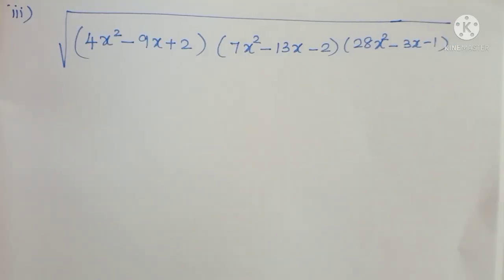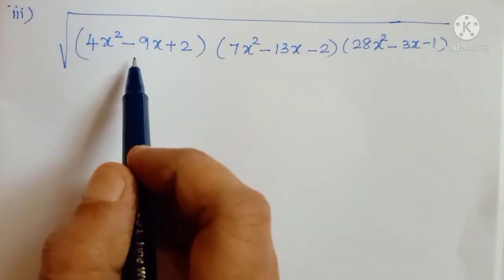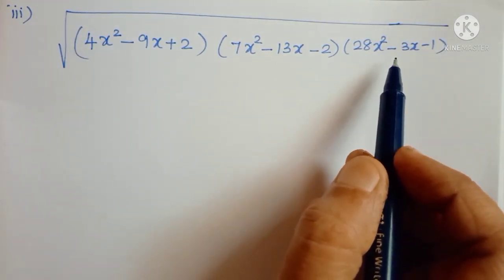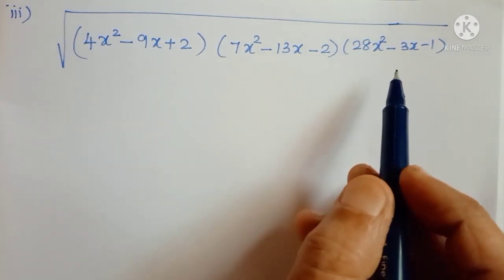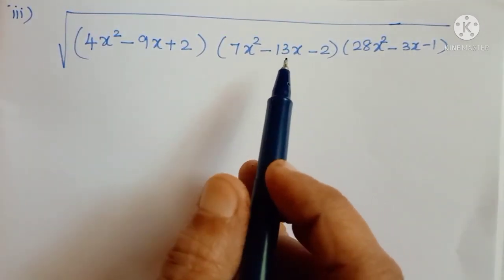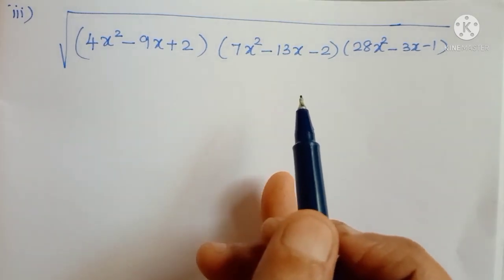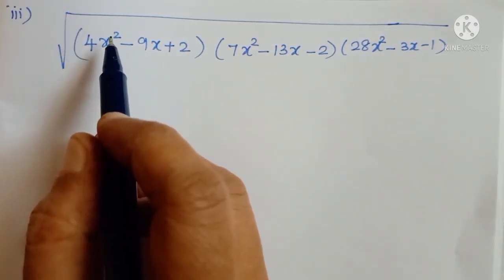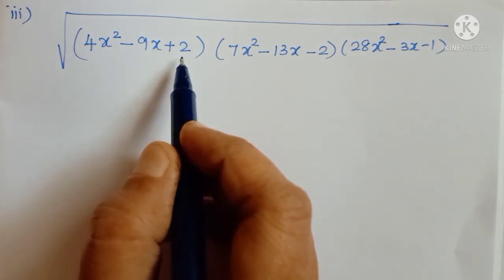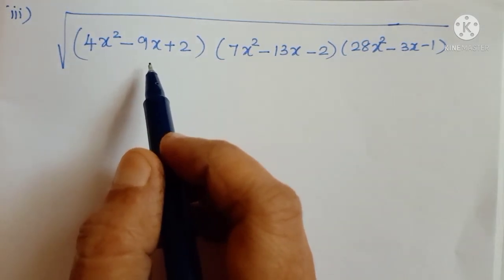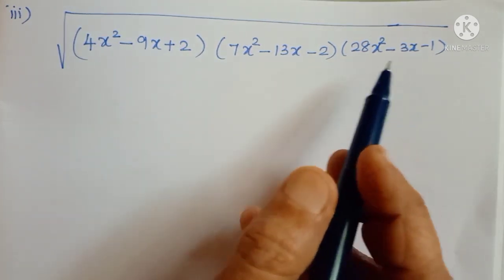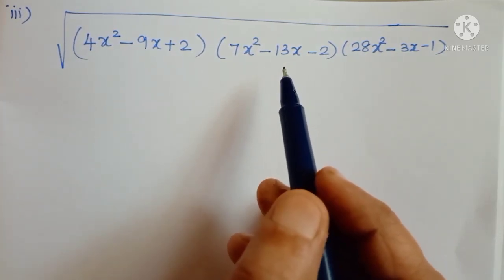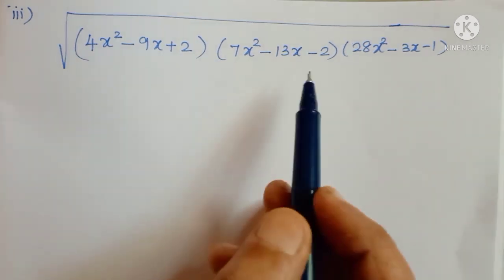Now see the third subdivision: square root of 4x squared minus 9x plus 2, multiplied by 7x squared minus 13x minus 2, multiplied by 28x squared minus 3x minus 1. Now these are quadratic expressions. We can use either the formula method or the factorization method. Here 4x squared is 2x whole squared, but the constant 2 is not a perfect square. So here we can use only the factorization method. All three expressions are of the same type, so we take the factorization method.